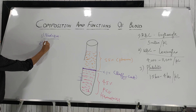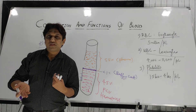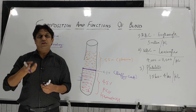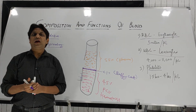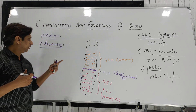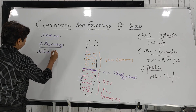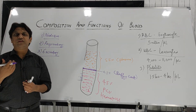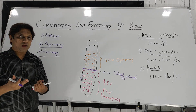Blood also has a respiratory function. Our lungs take in oxygen and exhale carbon dioxide. Oxygen from the lungs is transported to various cells and tissues with the help of blood, and carbon dioxide is transported from the cells back to the lungs. Blood also has an excretory function — waste products like urea are transported from the cells to excretory organs like the kidneys and skin through the blood.